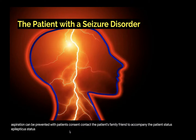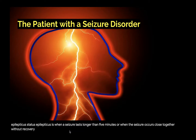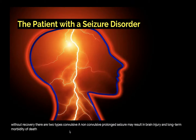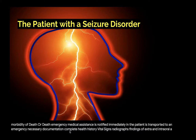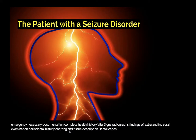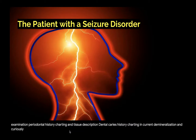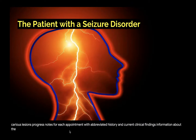Status epilepticus is when a seizure lasts longer than five minutes or when seizures occur close together without recovery; there are two types: convulsive and non-convulsive. A prolonged seizure may result in brain injury, long-term morbidity, or death. Emergency medical assistance is notified immediately and the patient is transported to an emergency department; basic life support is provided if necessary. Documentation should include a complete health history, vital signs, radiographs, extra- and intraoral examination findings, periodontal history and tissue description, dental caries history, current demineralization and caries lesions, progress notes for each appointment, and information about the type of seizure, the treatment the patient is receiving, and steps to take in the event of an emergency.